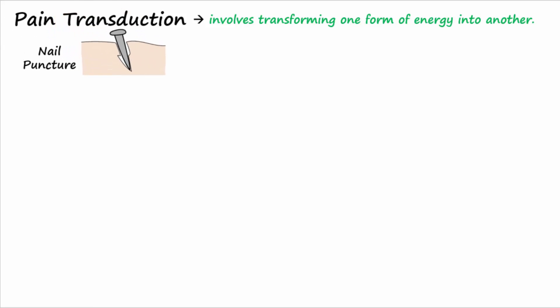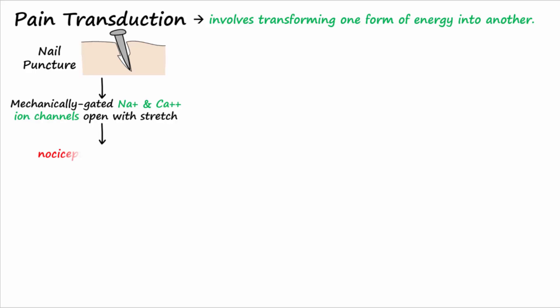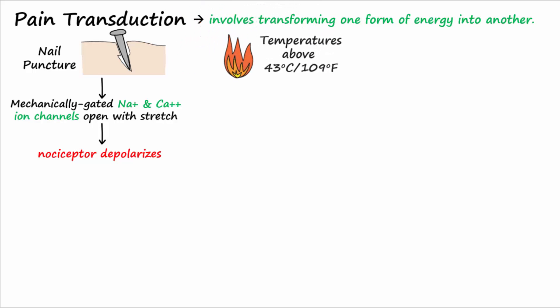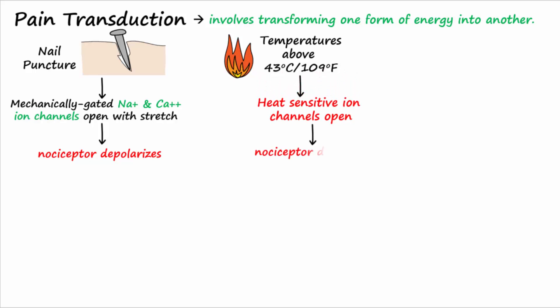Consider your skin being punctured by a nail — this mechanical stimulus bends or stretches the nociceptor membrane and opens mechanically gated ion channels for sodium and calcium. These ions rush into the cell, depolarizing the nociceptor membrane. Also, heat above 43 degrees Celsius, or 109 degrees Fahrenheit, causes painful burning sensations. At these temperatures, heat-sensitive ion channels in the nociceptor membrane open to depolarize the nociceptor.